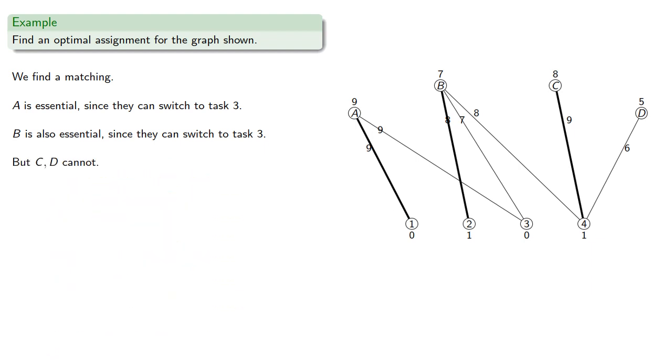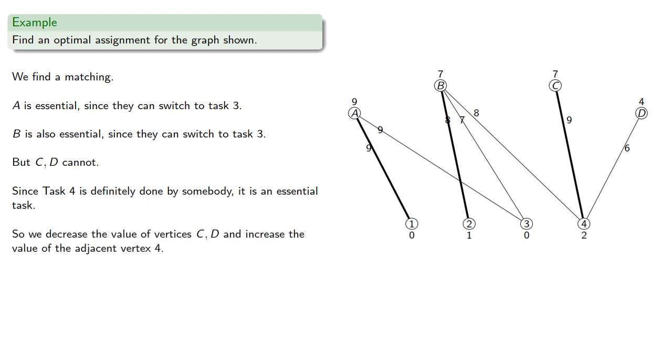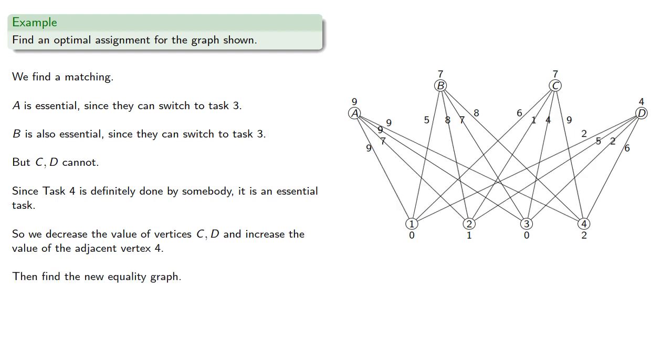However, C and D cannot. And since task 4 is definitely done by somebody, it is an essential task. So we decrease the value of vertices C and D and increase the value of the adjacent vertex 4. Then find the new equality graph.